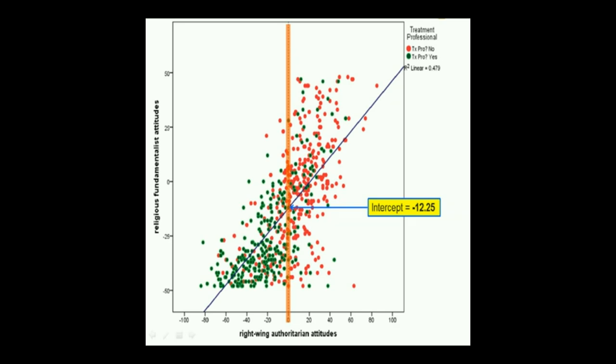In this case, the y-intercept tells us the religious fundamentalism score we would predict for a person whose right-wing authoritarian attitudes were always neutral. On average, this person answered neutral. All their positives canceled out their negatives. Or they just said neutral all the way through the questionnaire. Is that useful? I don't know. It depends on your research question. Maybe. But it's a bit weird.